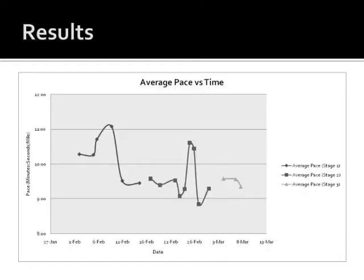Here are some of my results. This first graph gives my average pace during runs over time. As you can see, in stage 1, the pre-intervention stage, my pace was very inconsistent and much slower than later stages. This may have been due to the fact that I was unaware of my pace, or simply because I was still adjusting to running daily. During the intervention stage, the graph indicates that I was running at a much faster pace, an indication that the auditory announcements were motivating me to run faster. In the post-intervention stage, my pace remained consistent around 9.5 minutes per mile.